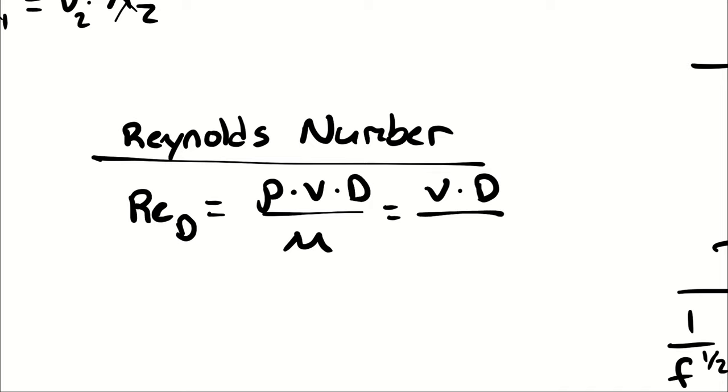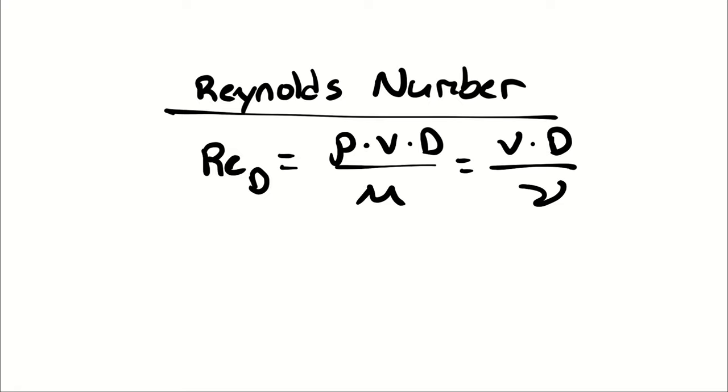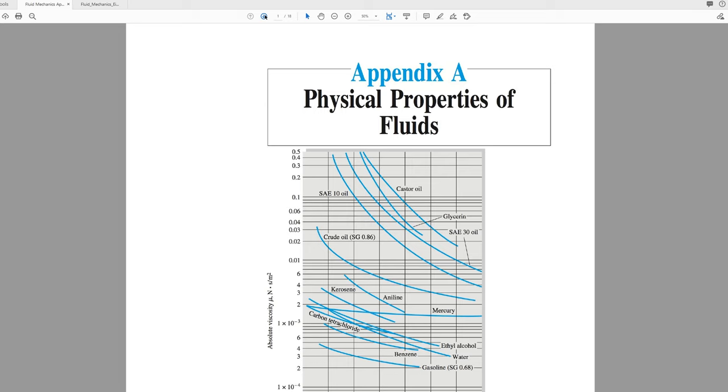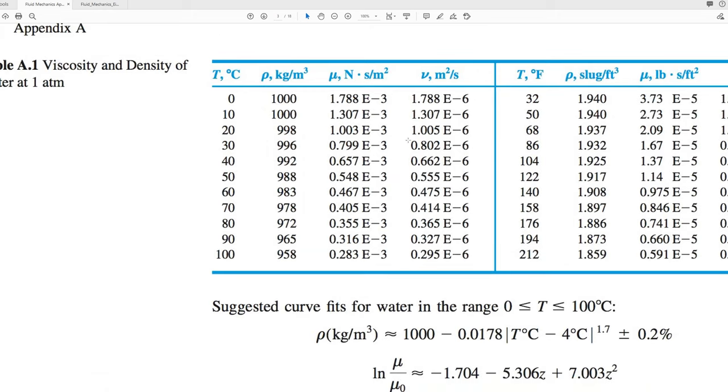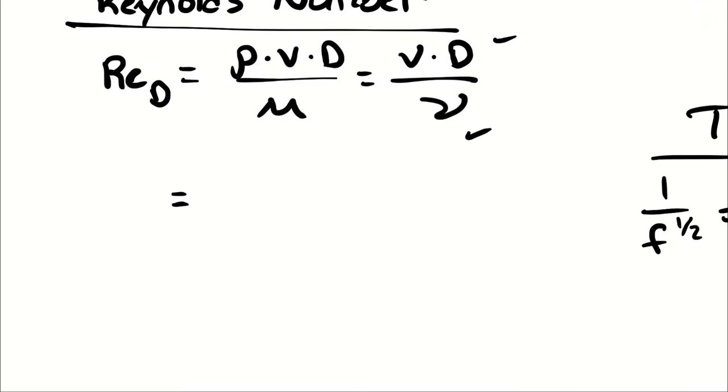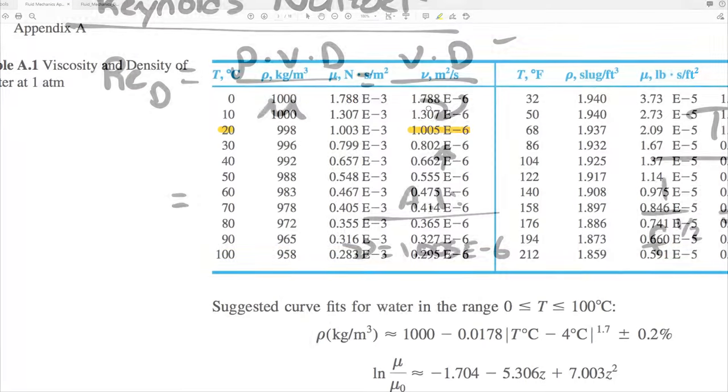For convenience I'm going to write this in terms of kinematic viscosity so I only have to look up one property. I have incompressible water at 20 degrees Celsius, which means I'm going to go into table A1. On table A1 I can read off the density, dynamic viscosity, and kinematic viscosity as a function of temperature for water. At 20 degrees Celsius the kinematic viscosity is 1.005 times 10 to the negative 6th meters squared per second.